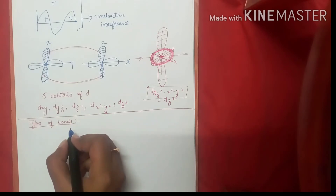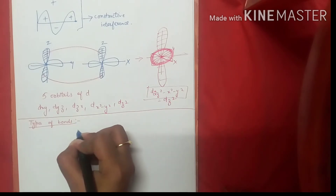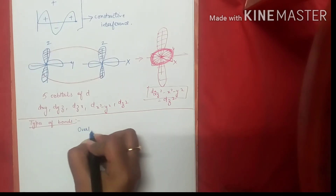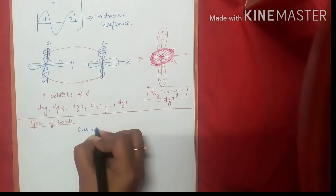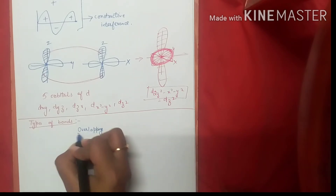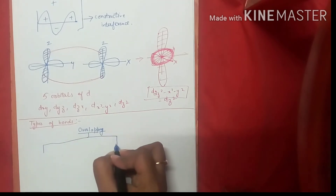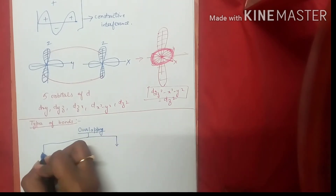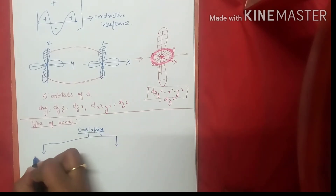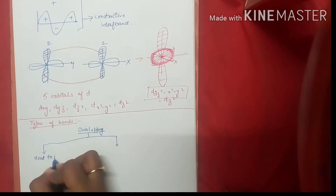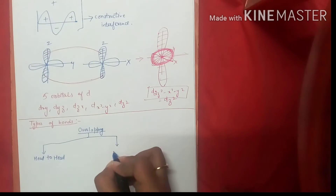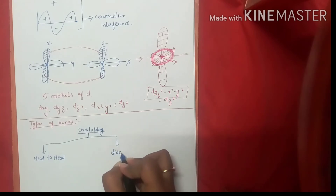Before starting types of bonds, I want you to understand types of overlapping. Overlapping can be of two types: head-to-head, or it can be sideways.